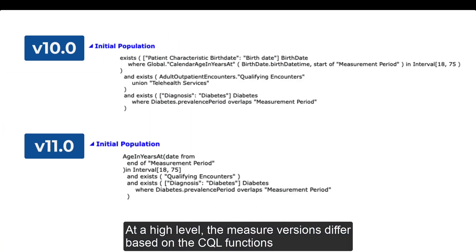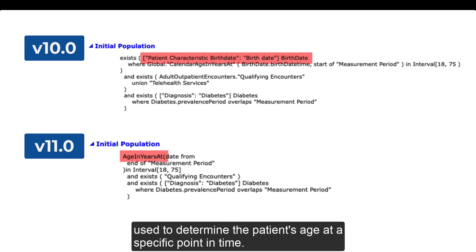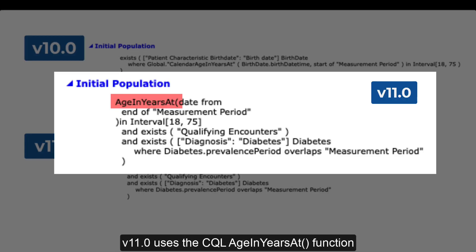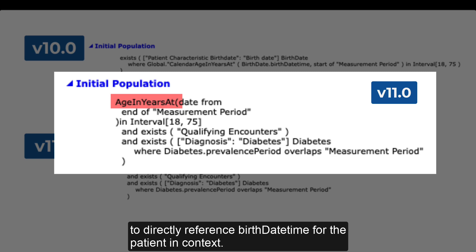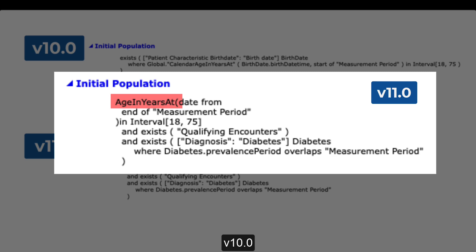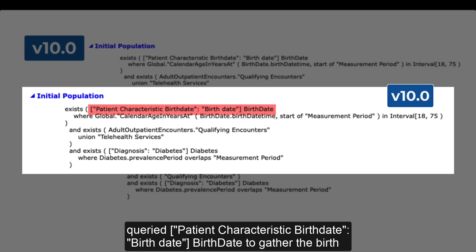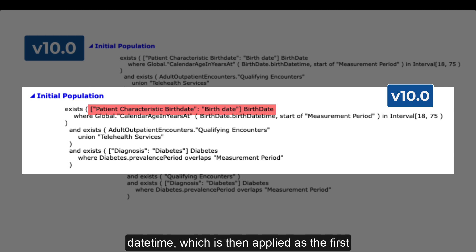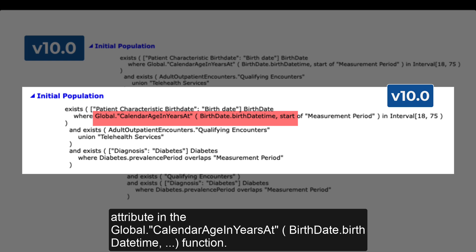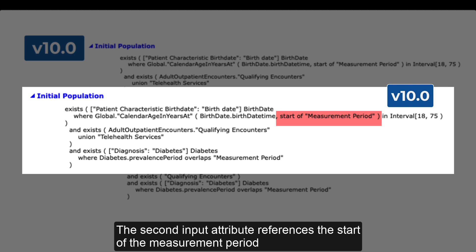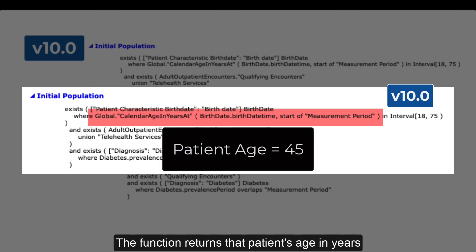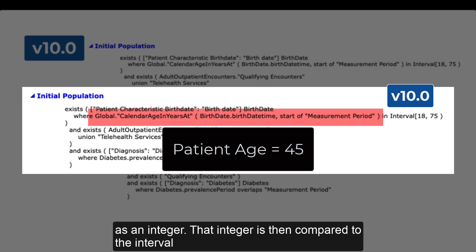At a high level, the measure versions differ based on the CQL functions used to determine the patient's age at a specific point in time. Version 11 uses the CQL age in years at function to directly reference birth date time for the patient in context. Version 10 queried patient characteristic birth date to gather the birth date time, which is then applied as the first attribute in the global calendar age in years at function. The second input attribute references the start of the measurement period. The function returns that patient's age in years as an integer.